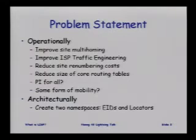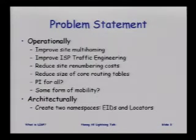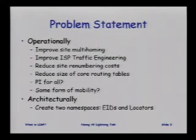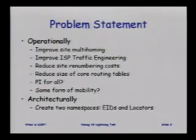We also want to reduce site renumbering costs. We want to reduce the size of the core routing tables, to make it more efficient so there's a better cost-benefit ratio in buying routers and deploying them. So if we do these sort of things, could we have provider independent addresses for everybody and can we make it scale?